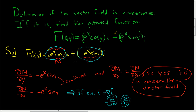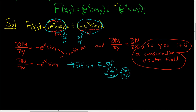All we do is take ∂f/∂x and set it equal to M, and take ∂f/∂y and set it equal to N. So ∂f/∂x equals e to the x cosine y, and ∂f/∂y equals negative e to the x sine y.